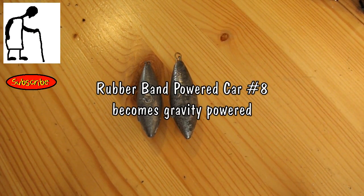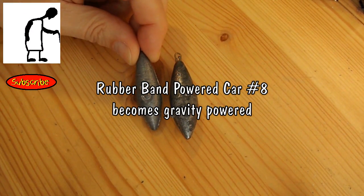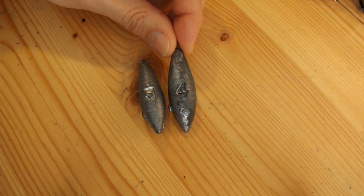Hi guys, we're looking at a couple of my old sea fishing weights here. One's 3 ounces and one's 4 ounces.